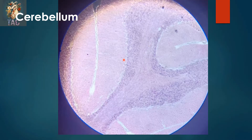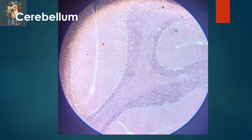This is another slide at low magnification of the cerebellum, in which you can see the different folia of the cerebellum. Again you can see the outer molecular layer, then the middle Purkinje cell layer, then the inner granular layer, and this is the white matter.